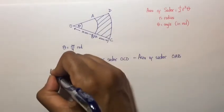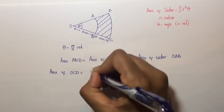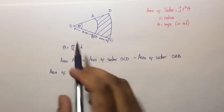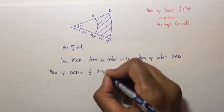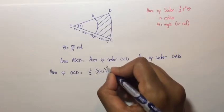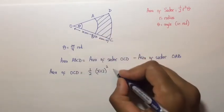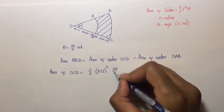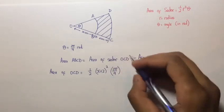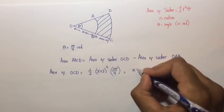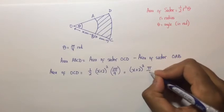Let's look at the area of OCD. That is equal to half times the radius OC, which is x plus 2 centimeters, squared, times theta which is 2π/9. So that equals (x+2)² times π/9.